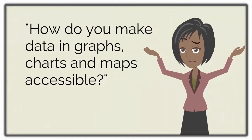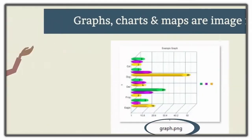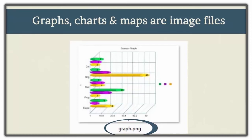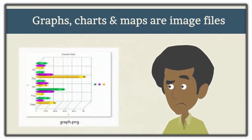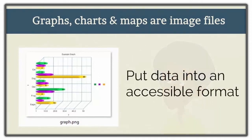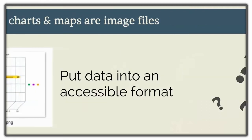How do you make data and graphs, charts, and maps accessible? Most graphs, charts, and maps are just images, so to get information from them you have to be able to see the graph, chart, or map. The only way to make this information accessible to users who are fully blind is to translate the data into a format that assistive technology, like screen readers, can read.